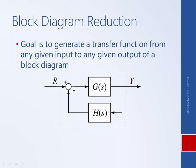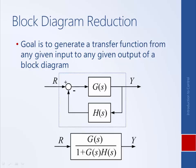With a single input R and a single output Y, it turns out that this block diagram reduces into a specific form, so the transfer function Y divided by R equals that result. What we're going to do now is learn how to perform that reduction.